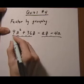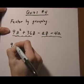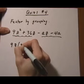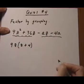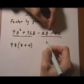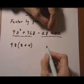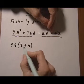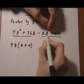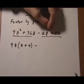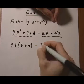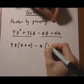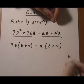For the first one the GCF is 9z. And we're left with z plus 4. The next one, if we want to have the correct sign on the binomial that's left, we're going to need plus plus, which means we have to pull out the minus sign as a common factor. And then they both have an a. So we pull that out and we're left with z plus 4.